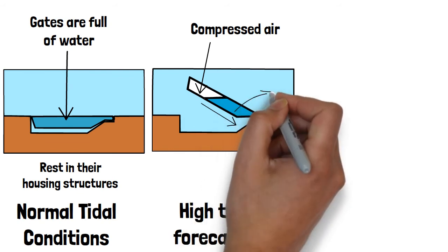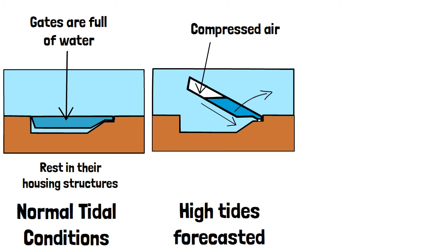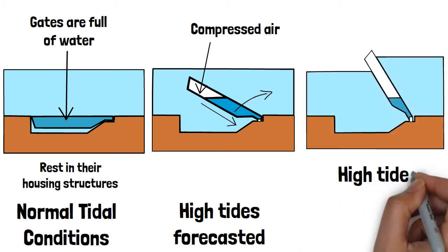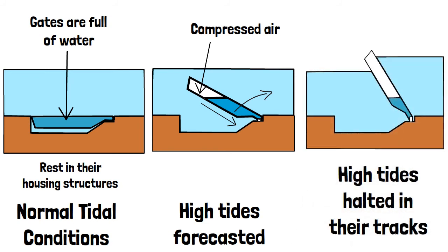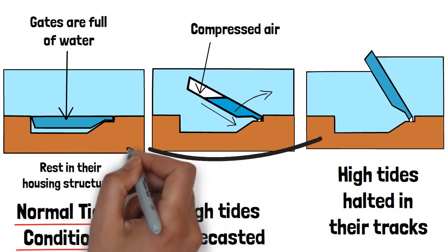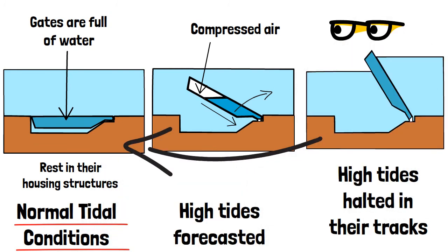which results in water emptying from the gates, allowing for the gates to rotate around their axis until they emerge out of the water to prevent the tide from entering the lagoon. When tidal conditions return to normal, the gates are then refilled, allowing them to return back to their housing structures. Some smart stuff!